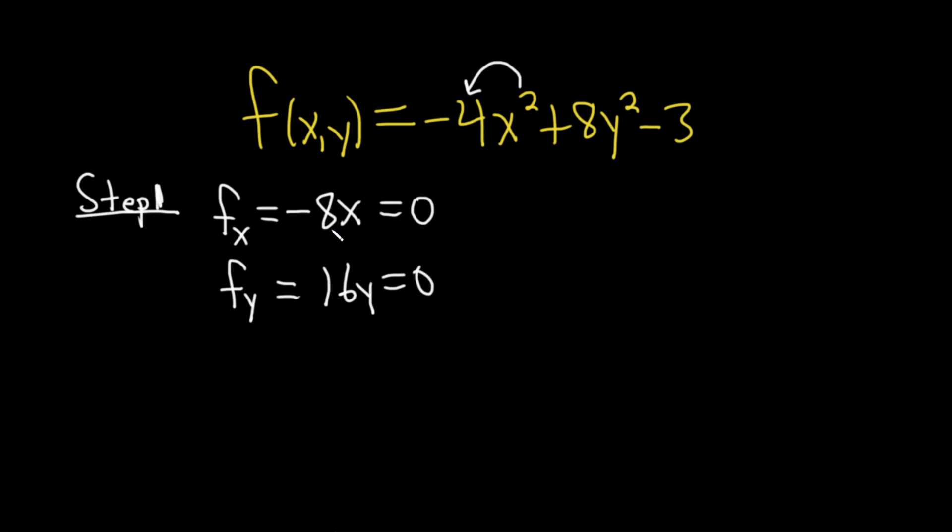This is really easy to solve. Just divide by negative 8. We get x equals 0. Divide by 16. So we get y equals 0. So that's the first step in the second partials test. This is what we're going to test. We're going to test to see if this will give us a local maximum or minimum or a saddle point.